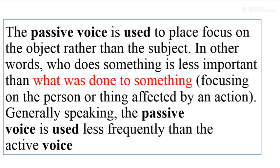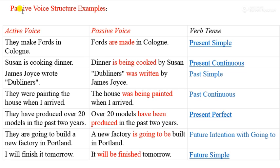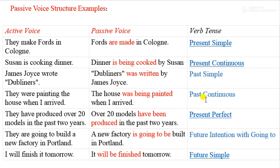Let's look at the passive voice structure with examples. For present simple: active voice — 'they make words in the factory'; passive voice — 'words are made in the factory.' For present continuous: active — 'Season is cooking dinner'; passive — 'dinner is being cooked by Season.' For past simple: active — 'Janice Joyce wrote two players'; passive — 'two players was written by Janice Joyce.'